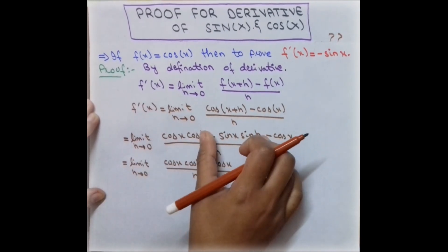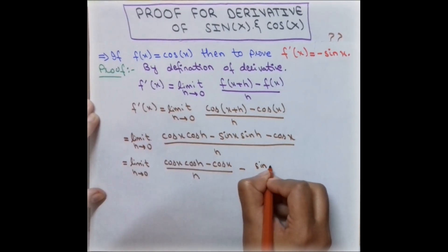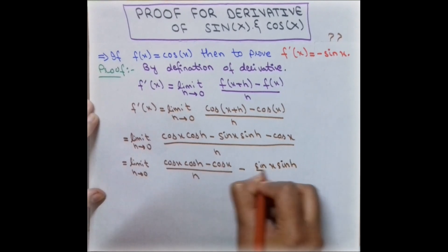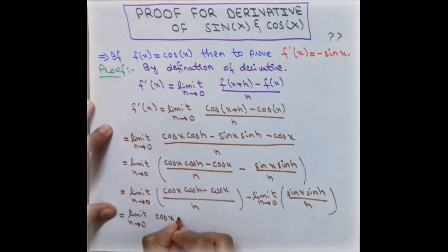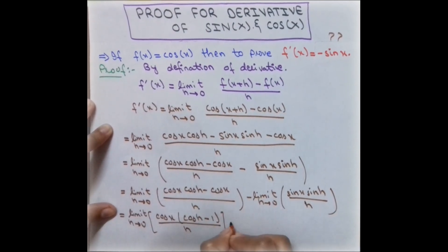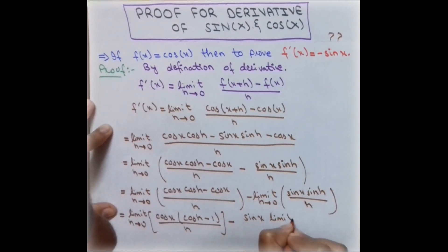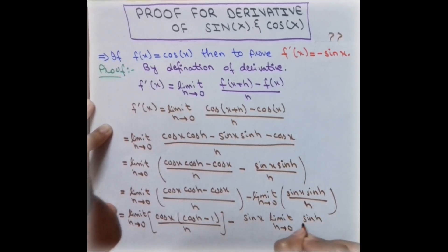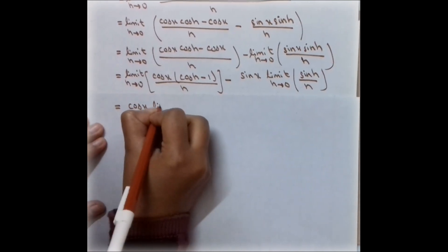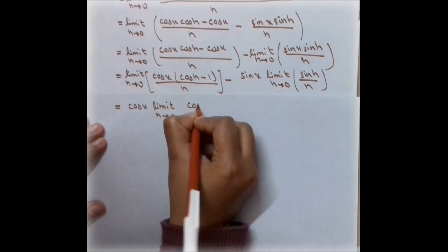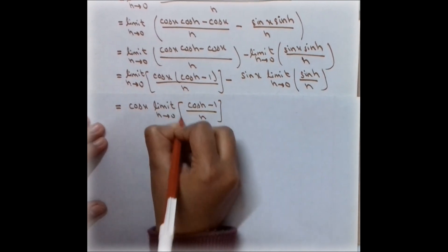We separate this into two parts: [cos(x)cos(h) minus cos(x)] over h, and minus sin(x)sin(h) over h. Taking cos(x) as a common factor in the first part, we get cos(x) times [cos(h) minus 1]/h. Since sin(x) does not depend on h, we write it outside its limit, giving minus sin(x) times sin(h)/h.